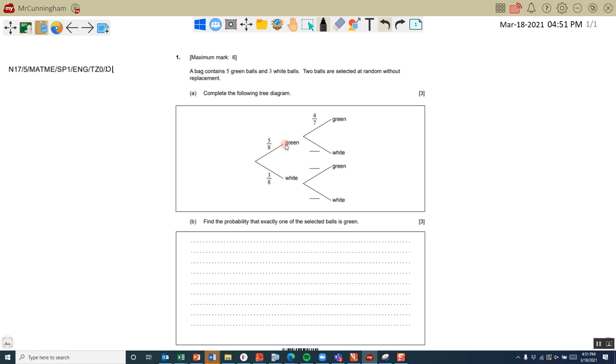The probability of the first ball being green is 5/8. If I pick a green one and then pick another green one, that leaves only four green left out of a possible seven. I still have three white balls I could pick from, so that's 3/7.